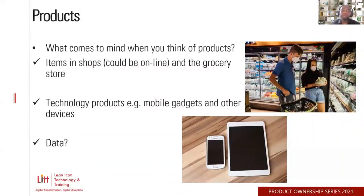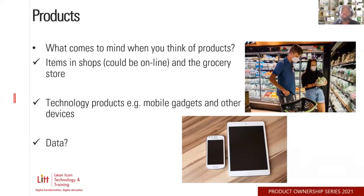When people think about products, you would normally think about things you buy at the grocery store — groceries, food, stuff like that. Or sometimes, depending on the generation you're talking to, they're thinking about technology products — gadgets, iPhones, iPads, things like that, even your Ring doorbell.